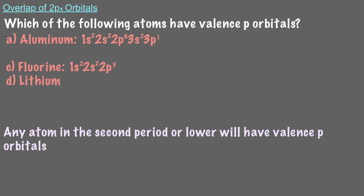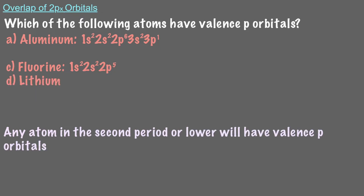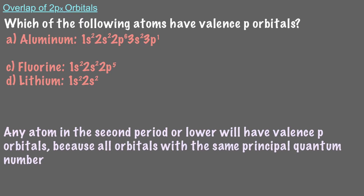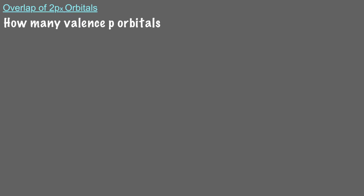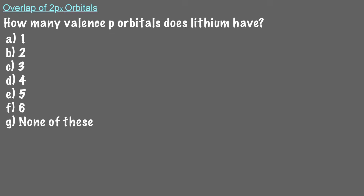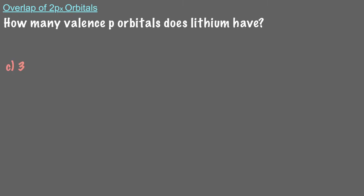Even though lithium's ground state is 1s2, 2s1, there are still valence 2p orbitals because all orbitals with the same principal quantum number n are roughly the same energy. How many valence p orbitals does lithium have? That's right, lithium will have 3 valence 2p orbitals: 2px, 2py, and 2pz.